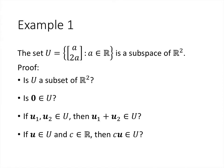Let's work through a few examples. If we have the set which is a subset of R2 — vectors that look like (a, 2a) where a is a real number — is this a subspace? In order for it to be a subspace, we have four things to show: first, that it's actually a subset; second, that it contains the zero vector; third, that it's closed under addition; and finally, that it's closed under scalar multiplication.